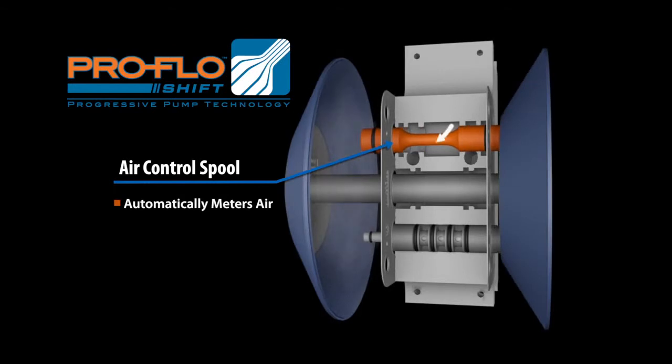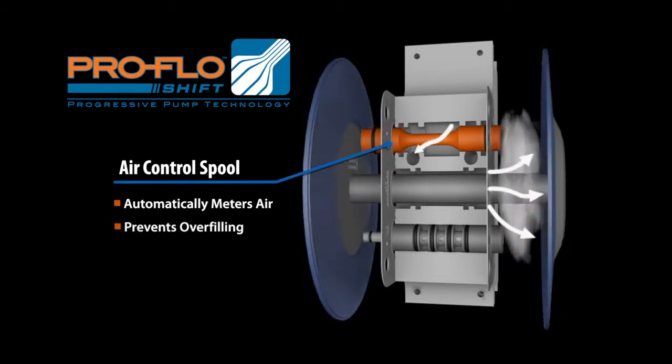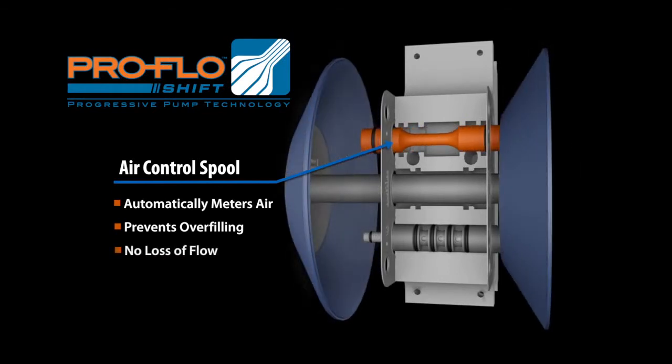The spool automatically meters air at the end of the stroke, preventing overcharging or overfilling of the air chamber without any loss of performance or product yield or flow.